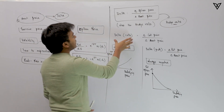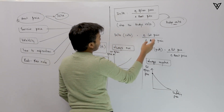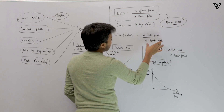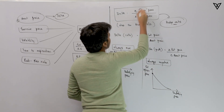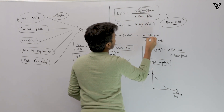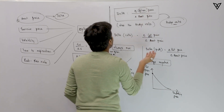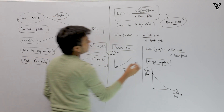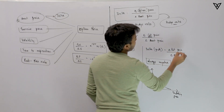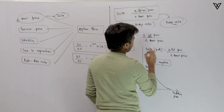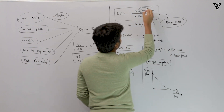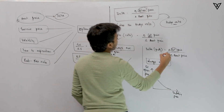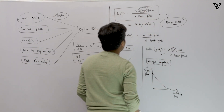For calls, delta would be the change in call price divided by the change in asset price. For puts, it would be the change in put price divided by the change in asset price. These two things are quite easy to understand.